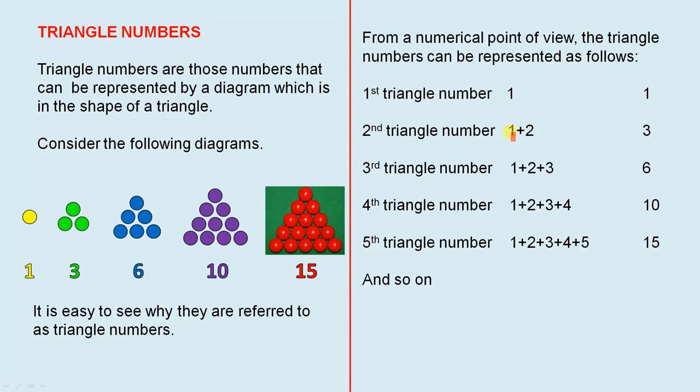The second triangle number is one plus two to give you three. So there's one there and those two. The third triangle number is one plus two plus three to give you six.